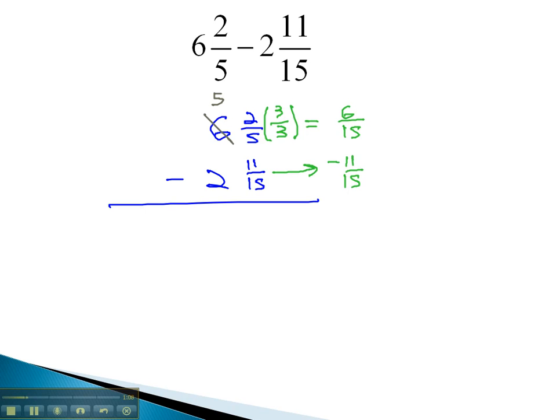What we are borrowing is one whole number. Keep in mind, the denominator is 15 here. 15 fifteenths is one whole. So we've borrowed 15 pieces.